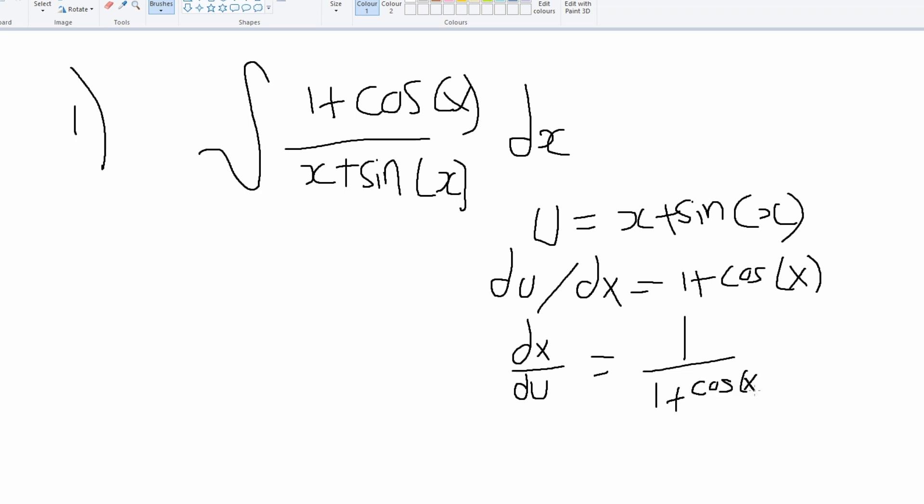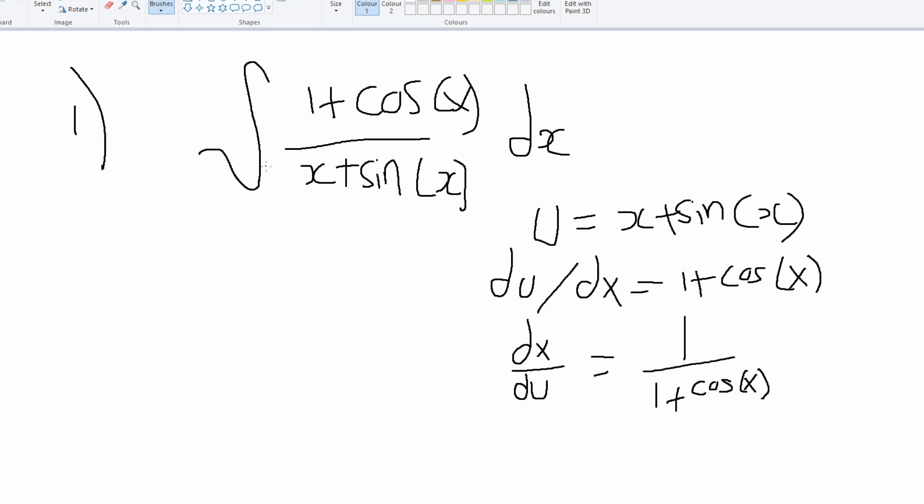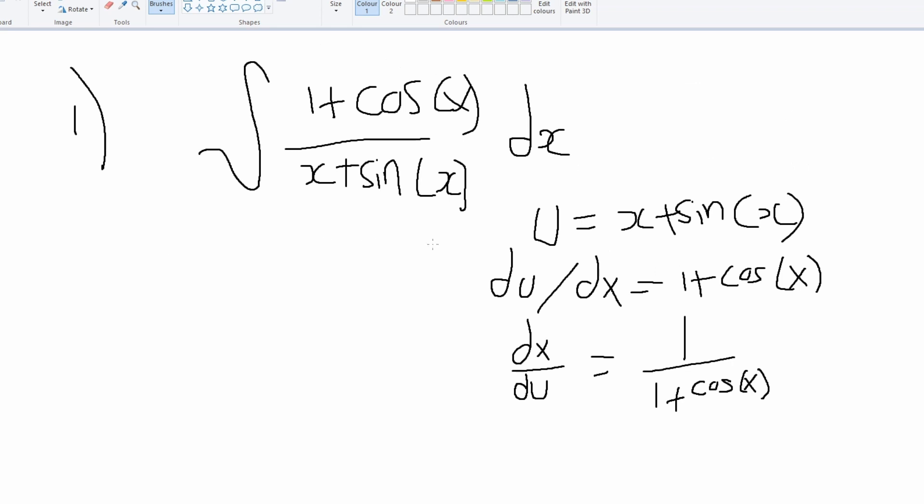And we can multiply that by this integral right here. Oh yeah, my bad guys, I meant to say integration by substitution, u-substitution. So then we're just gonna get really simply (1 + cos(x)) divided by u times (1 + cos(x)).